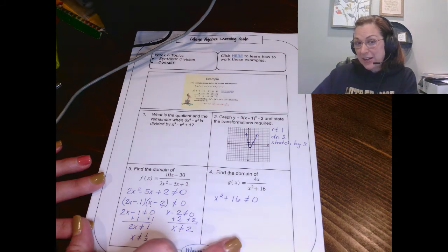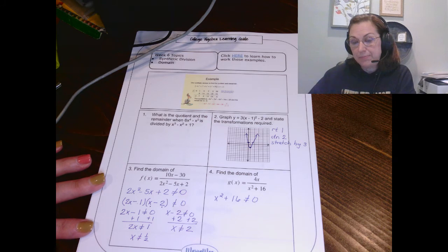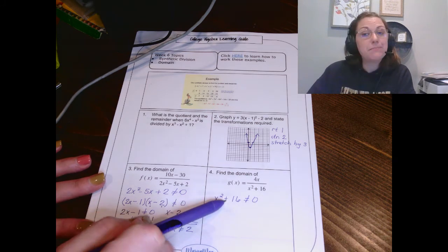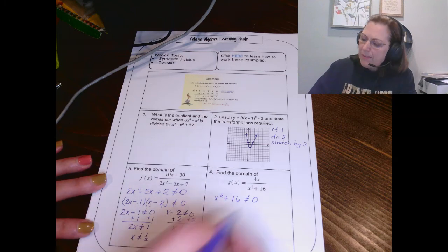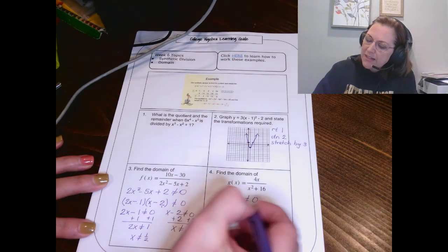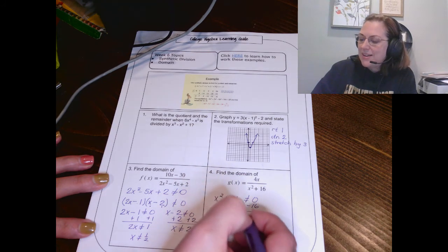Kind of a little different scenario going on over here on the right because I can't factor that. If this were a minus, yeah, I could factor it with a difference of two squares, but it's not. So I have to leave it. I'm going to go ahead and subtract it on the other side because I kind of want to see that x squared equals a negative number.